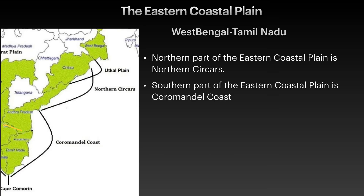The Eastern Coastal Plain begins from West Bengal in the north and passes through Odisha, Andhra Pradesh, and Tamil Nadu. The Western Coastal Plains and the Eastern Coastal Plains meet at Kanyakumari, the southernmost tip of the peninsula. The northern part of the Eastern Coastal Plain is called the Northern Sirkars and the southern part is called the Coromandel Coast.